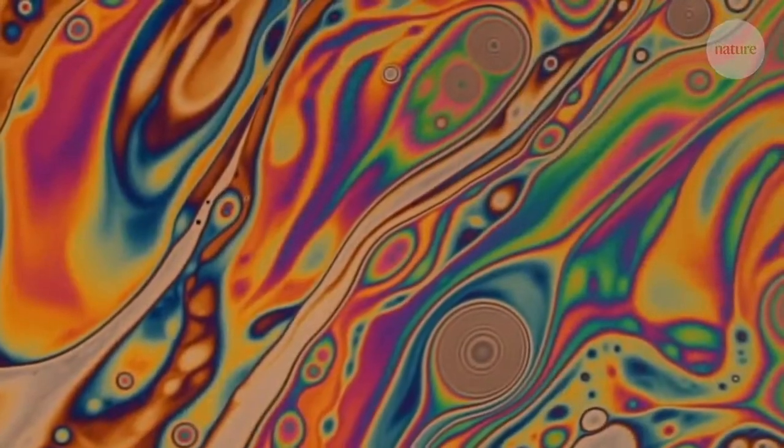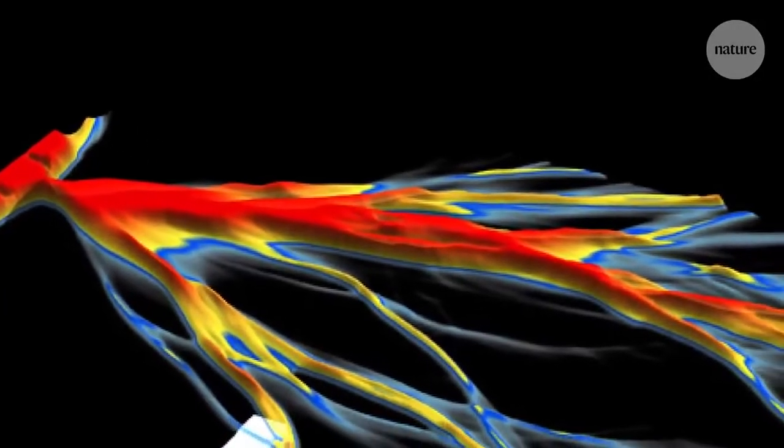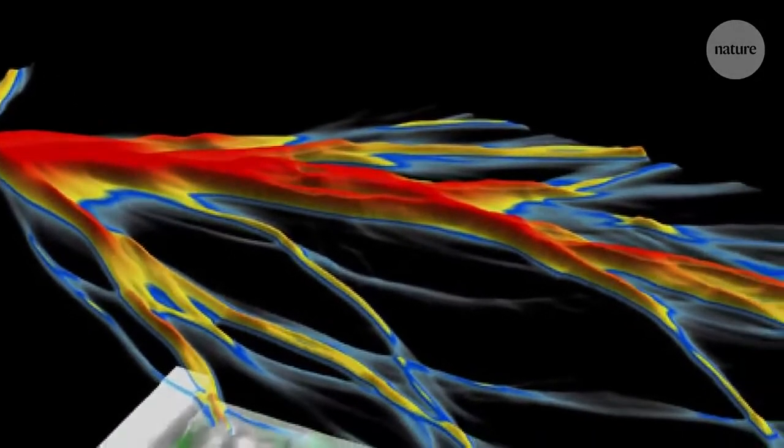But if the wave travels through just the right kind of medium, you end up with, that's right, branched flow. The beam divides up into an intricate tree-like pattern.